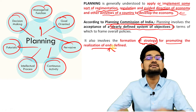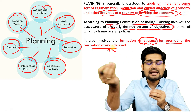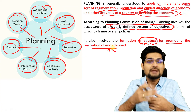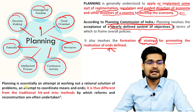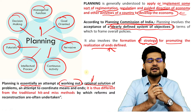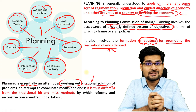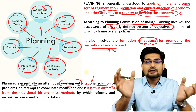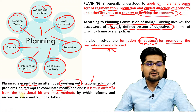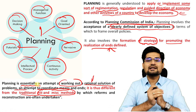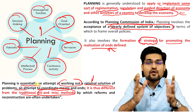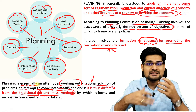Planning also involves formation of a strategy for promoting the realization of defined ends — to achieve something, you need to develop methods through reasoning and strategy-making. Planning is essentially an attempt to work out a rational solution — not irrational — but inclusive. It attempts to coordinate activities, which is why it's different from traditional hit-and-miss methods. Planning is about objectivity, focus, and the future defined in terms of present resources.